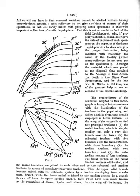Alula: broad lobe at the proximal posterior margin of the wing stalk of diptera; also termed the axillary lobe. Ambrosia: the fungus cultivated by wood-boring beetles of the family Scolytidae.